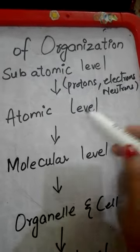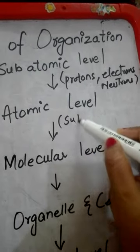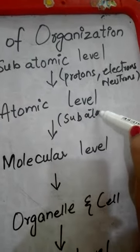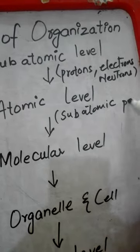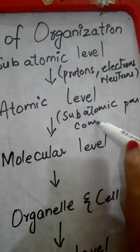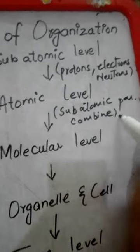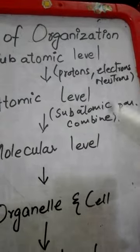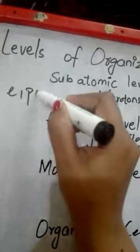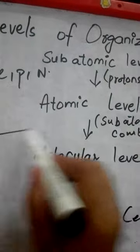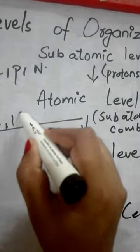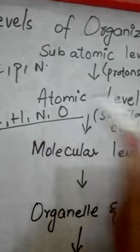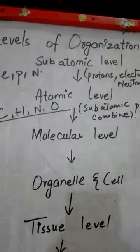Next to that is atomic level. These three subatomic particles combine to make an atom. Subatomic particles combine for making an atom. An atom is a combination of electron, proton and neutron. So it becomes an atomic level. When it was about electron, proton and neutron, now it has become about atoms. Atoms of carbon, hydrogen, nitrogen, oxygen, etc.